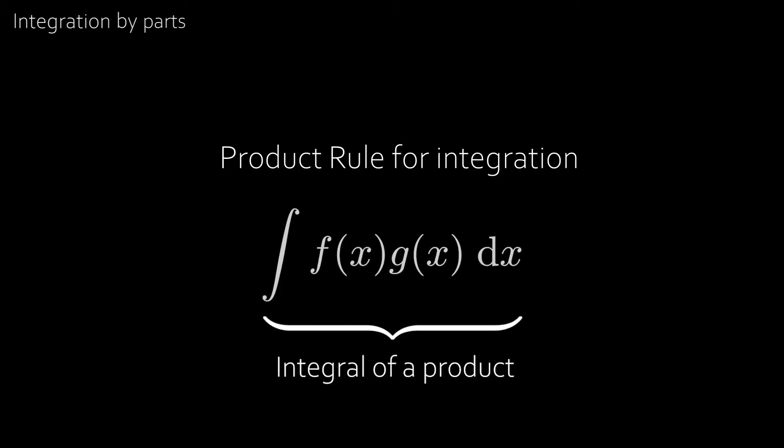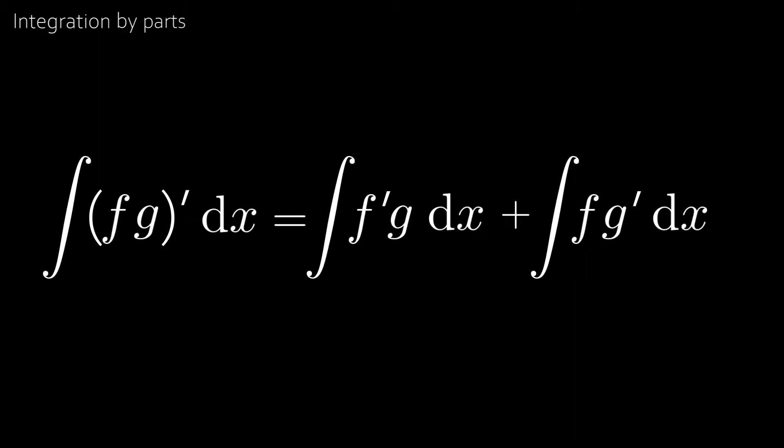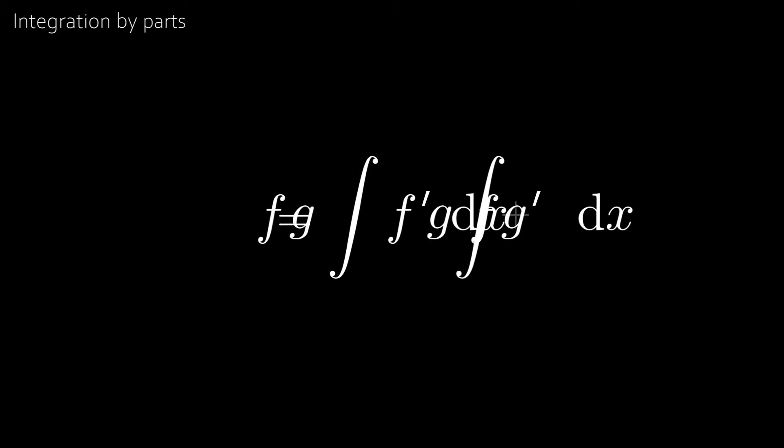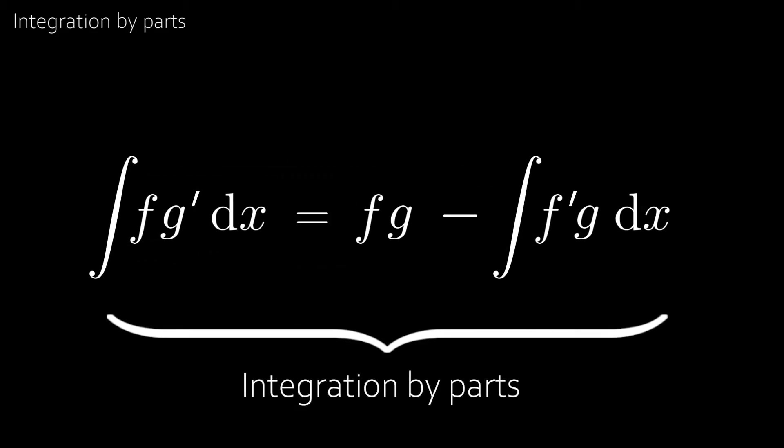Now integration by parts is like a product rule, but for integration. And since integration and differentiation are so strongly linked, let's start with the product rule for differentiation. Now we begin by integrating both sides, and on the left we have the integral of the derivative. And since integration and differentiation are inverses to each other, this just cancels out. Now doing a slight bit of rearranging gives us the famous integration by parts formula.